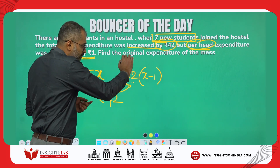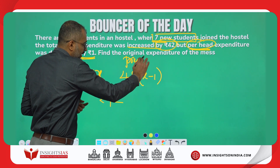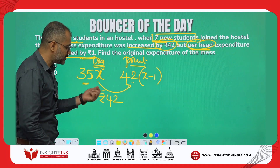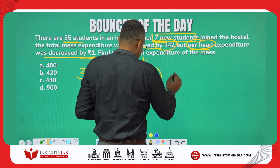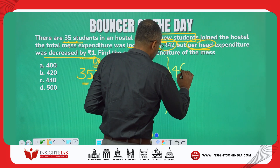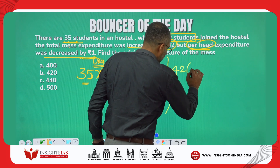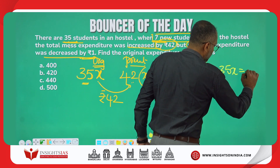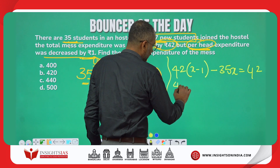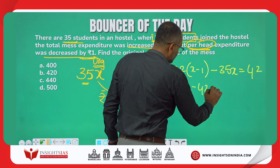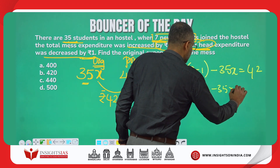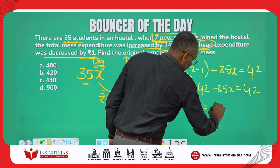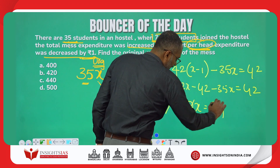The present bill minus the original bill equals 42. So: 42(x − 1) − 35x = 42. Expanding: 42x − 42 − 35x = 42, which gives 7x = 84.